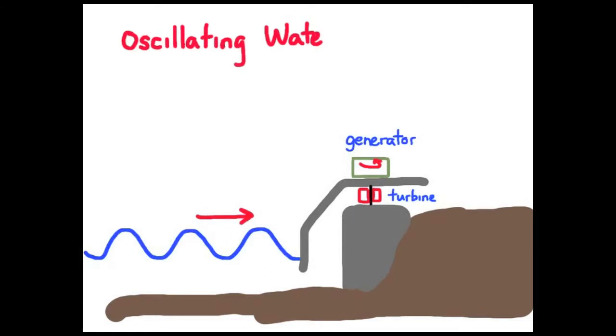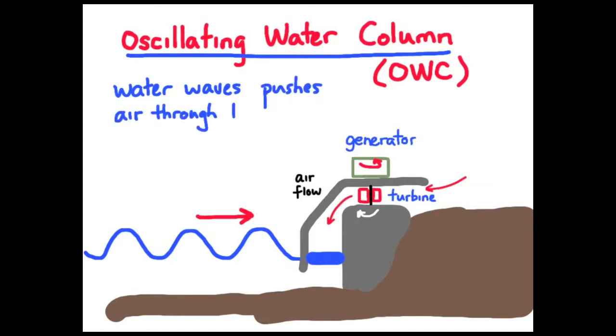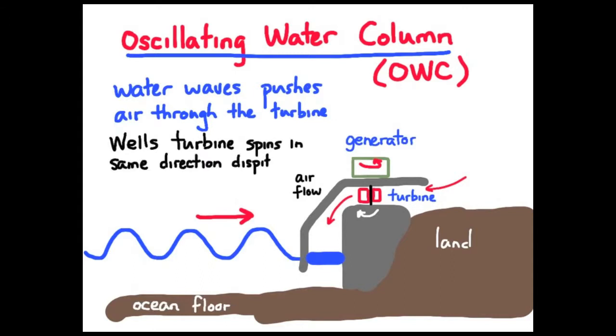So when the crest enters the ocean side of the turbine compartment, it compresses the air, forcing it through the turbine. And when a trough comes to the ocean side, it pulls air from the land side through the turbine. Wells turbine keeps it spinning in the same direction, and so you can actually generate quite a bit of electricity, even with some medium wave crests, medium amplitudes.